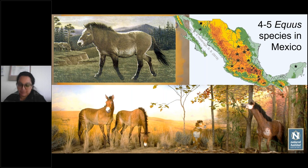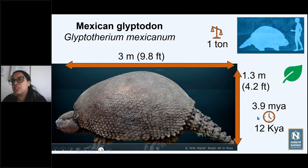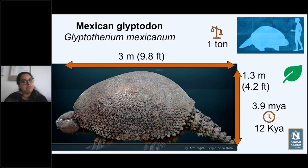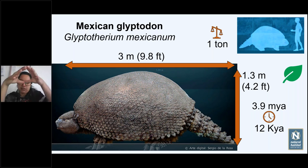A question about whether the glyptotherium was related to porcupines: no, it's actually more closely related to modern armadillos, which are like first or second cousins of the glyptotherium. Essentially, a glyptodont is like a giant armadillo without the segmented bands — instead it has one solid shell — but it is far more related to armadillos than to porcupines.